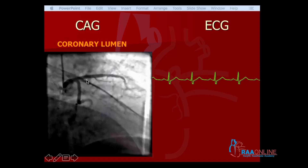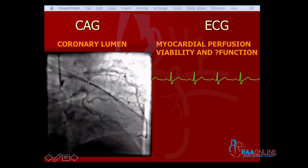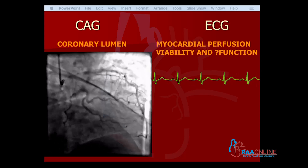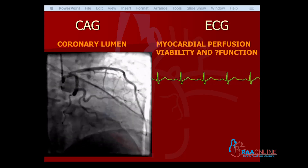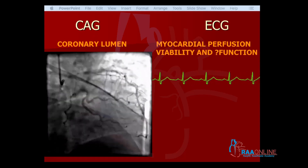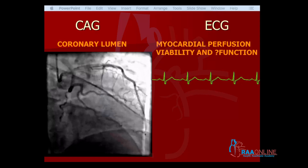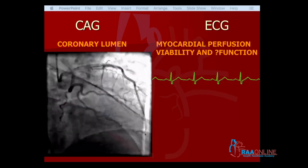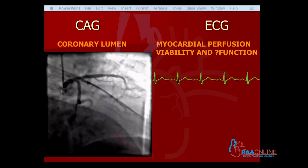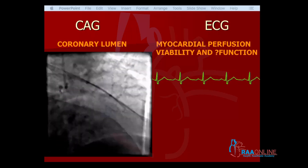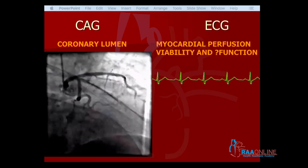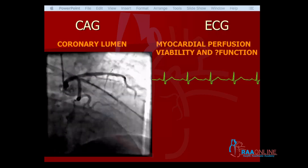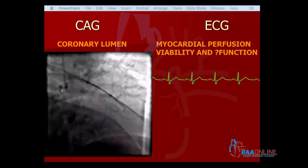Whereas the electrocardiogram gives you the ultimate perfusion of the myocardium. The ECG tells you whether your myocardial cell is receiving blood or not. The coronary angiogram only tells you about the big vessels. Still, the myocardium may not receive blood supply because the block may be in the medium vessels, in the capillaries, or in the arterioles. But the ECG will tell you whether the myocardial cell is receiving blood or not.